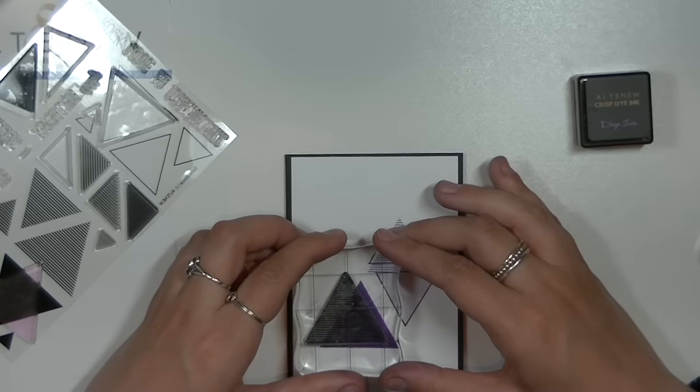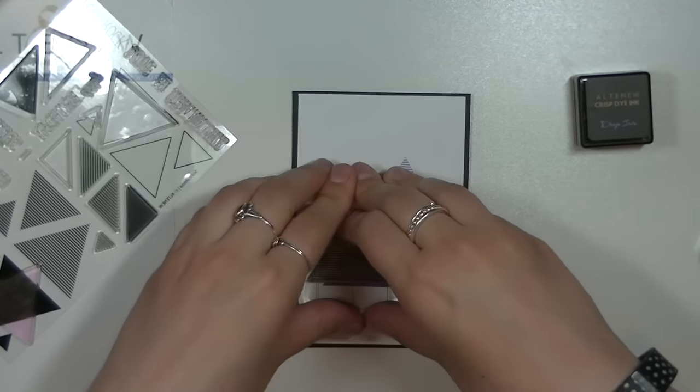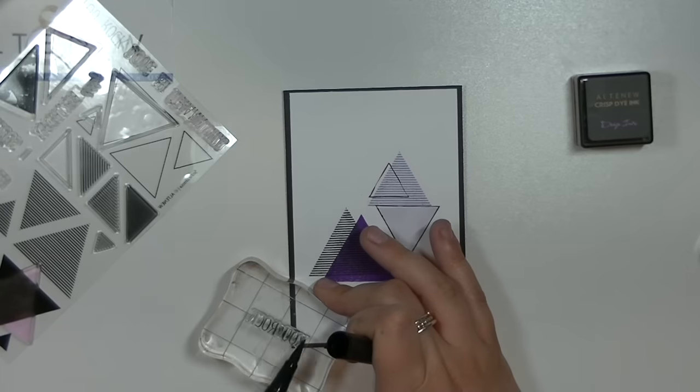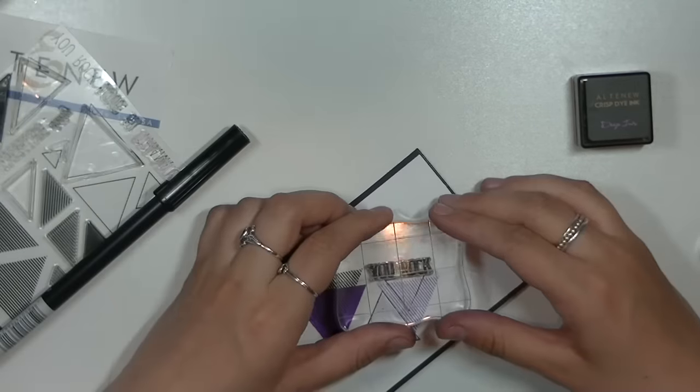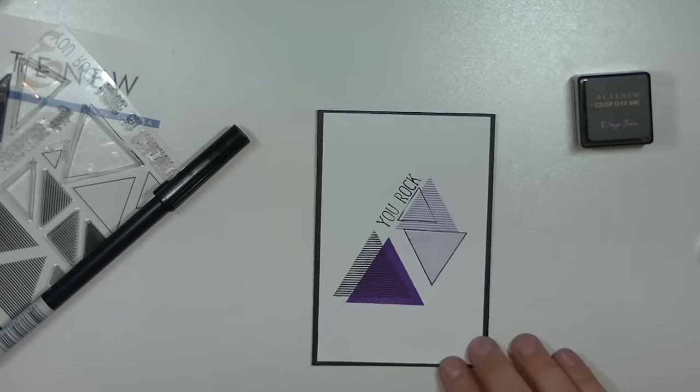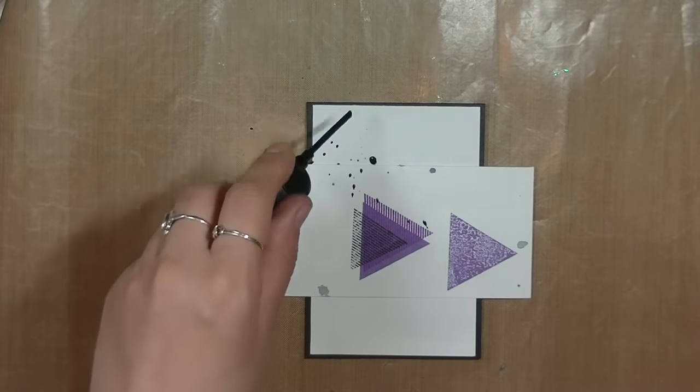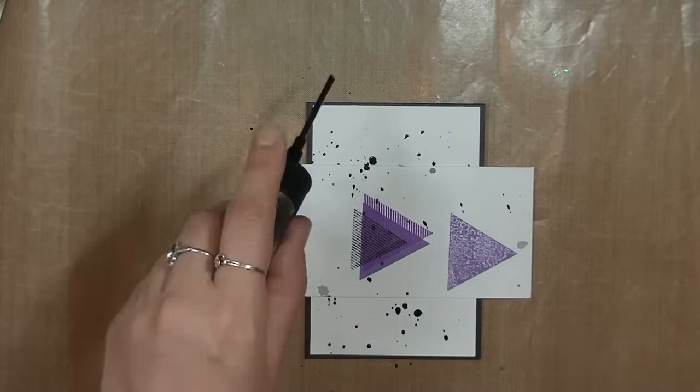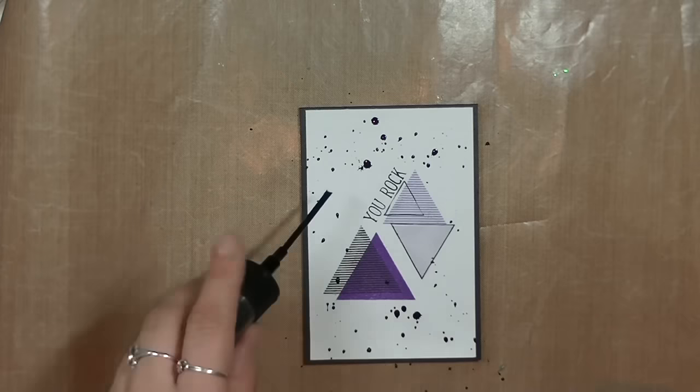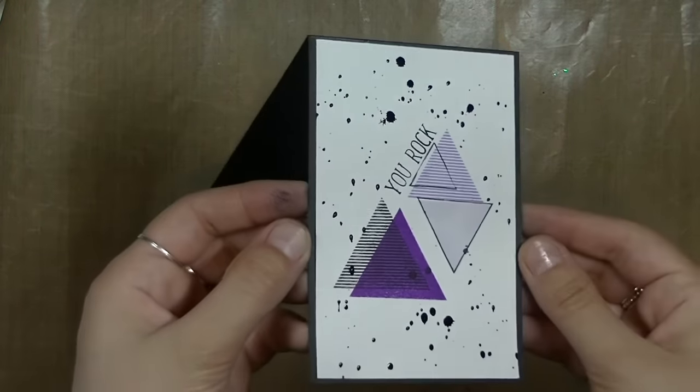I'm just going with the flow and creating random patterns. There's so many things you can do with this stamp set. There are so many different styles of triangles and you can make so many different patterns. I'm just using the black marble Delusions ink to add some black splatters around the card and it's done.